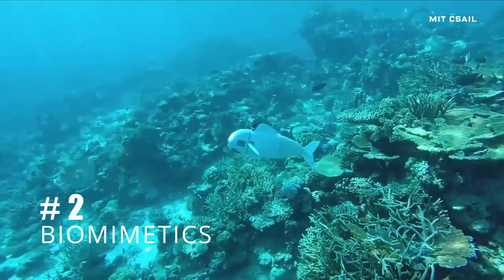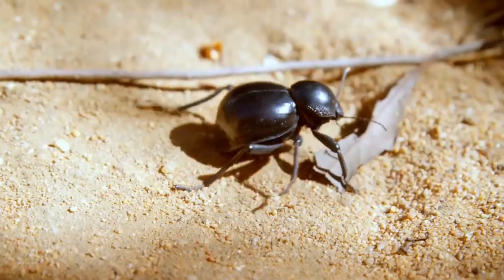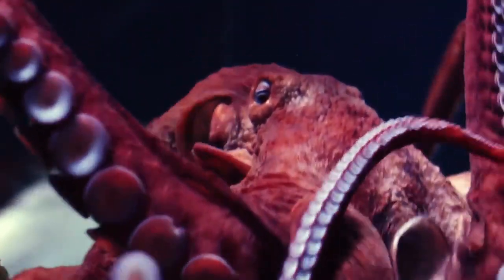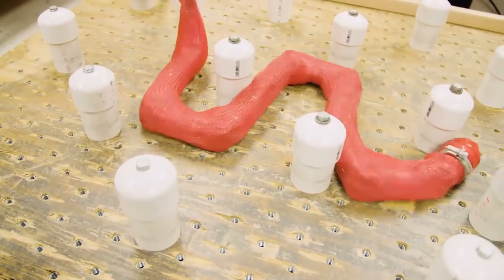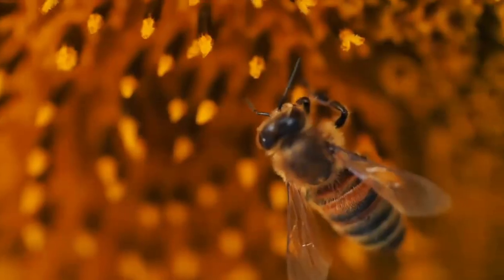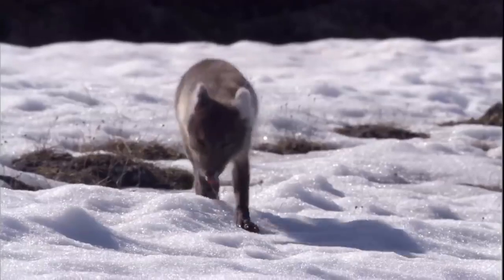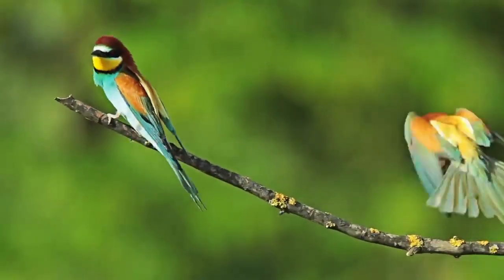Number 2: Biomimetics. Millions of years of natural evolution has allowed cellular organisms to optimize their movement in different environments. Biomimetics attempts to imitate these natural developments through the use of robotic systems. This is an extension of the ever-present desire of humanity to imitate mankind and create the perfect human robot.